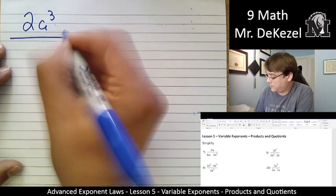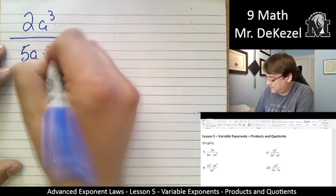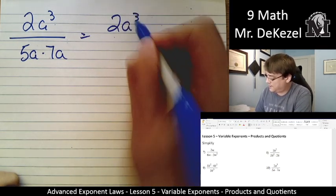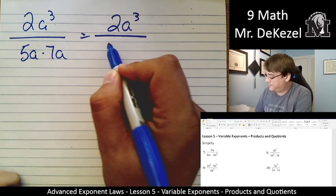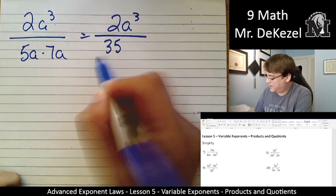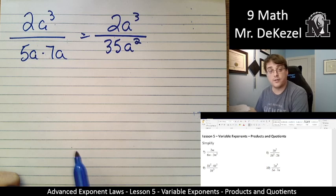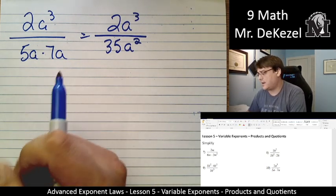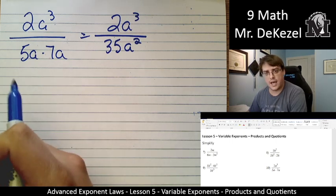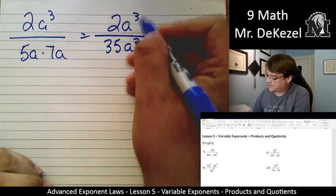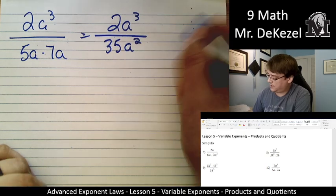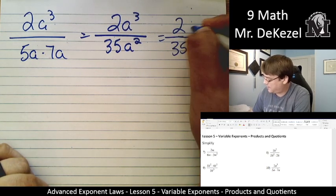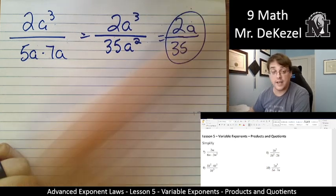Let's do another one. 2a cubed over 5a times 7a. Top and the bottom separately. Top stays the same for now. 5 times 7 is 35. a times a is a squared. The fraction 2 over 35 is as reduced as it's going to get. So we're going to then subtract 2 from 3. So that's 2 over 35. And we have a on top. And that is our final answer.